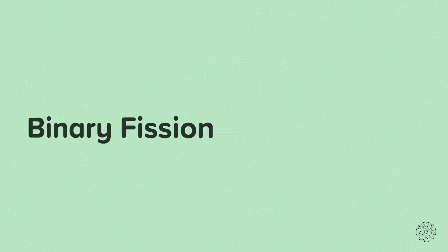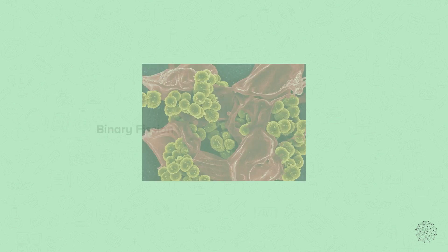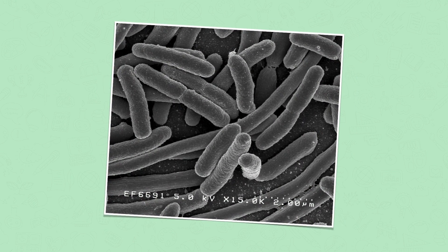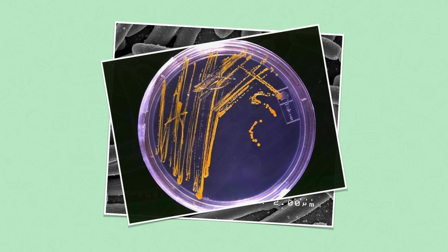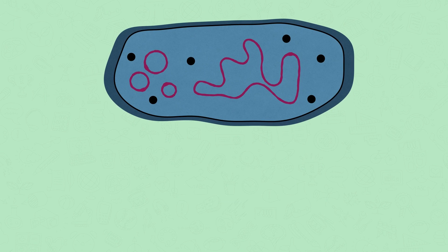In this nugget, we're going to be looking at binary fission. All living things are made of cells, and binary fission is a type of cell division. Binary fission happens in prokaryotic cells. Bacterial cells are a type of prokaryotic cell. Prokaryotic cells divide by binary fission.